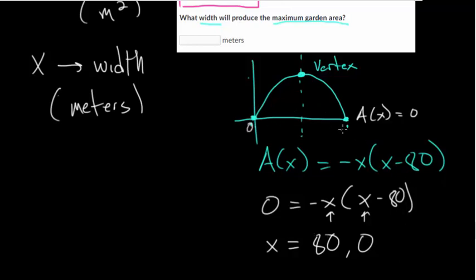This one here is at zero. This is at a width of 80 meters. And so right between them, you can add them and divide by two, but that would be a width of 40 meters. So at 40 meters of width, the maximum garden area would be produced.